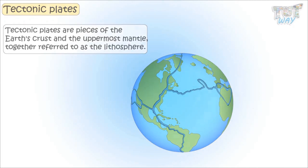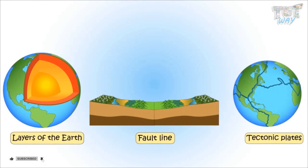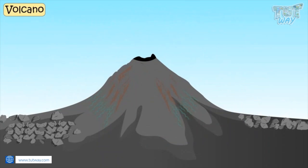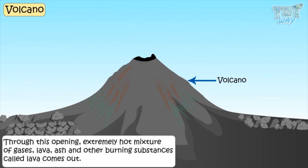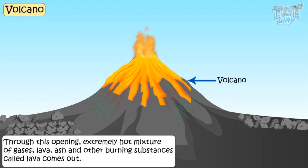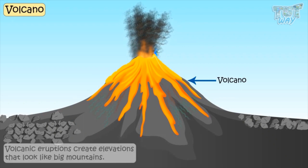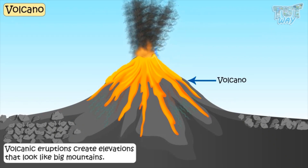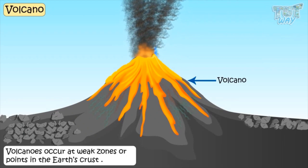Now we know what are the layers of earth, fault lines, and also what are tectonic plates. So now we are ready to learn what is a volcano. A volcano is an opening, or vent, in the earth's topmost layer, called crust. Through this opening, an extremely hot mixture of gases, lava, ash, and other burning substances comes out. Volcanic eruptions create elevations that look like big mountains. Volcanoes occur at weak zones or points in the earth's crust.